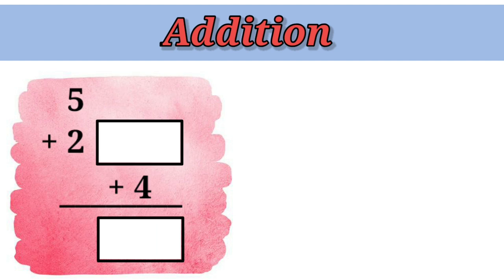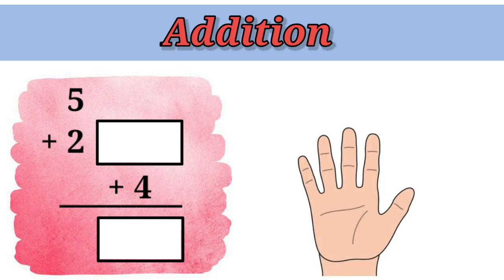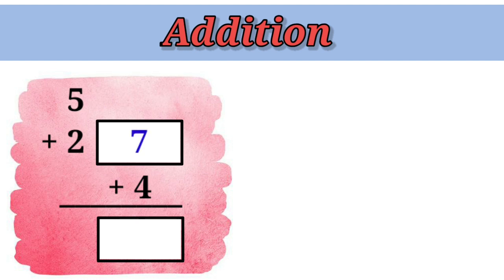Now, children, let's try another method of addition. 5 plus 2. Let's keep 5 in our mind and count 2 with our fingers. 5, 6, 7. So, 5 plus 2 is 7. Next, what shall we do? We shall add 7 with 4.